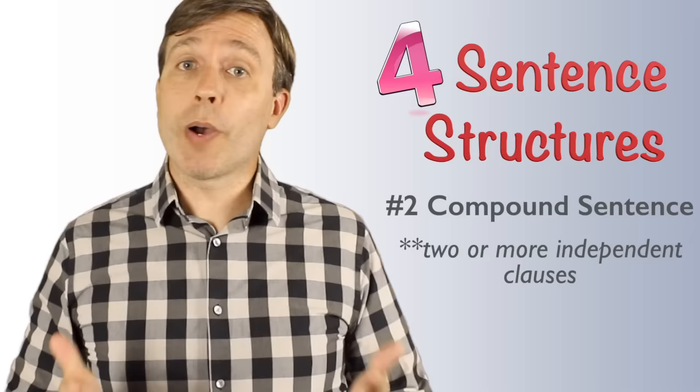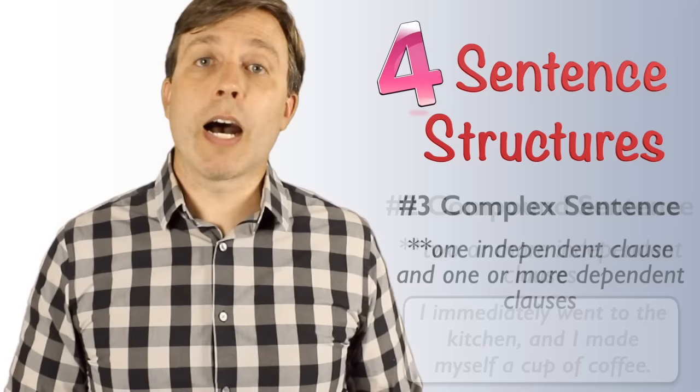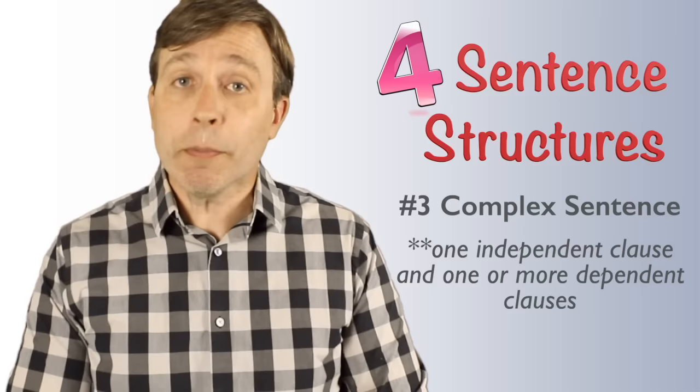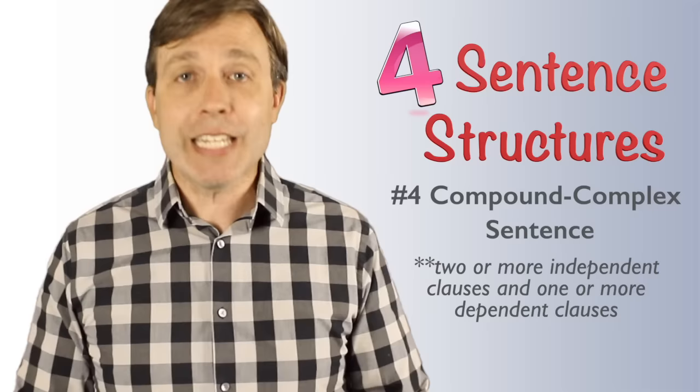We also have compound sentences, which is when you have two or more independent clauses. So continuing the story, I could say, I immediately went to the kitchen and I made myself a cup of coffee. A complex sentence is when you have one independent clause plus one or more dependent clauses. After I finished my coffee, I got ready for work.